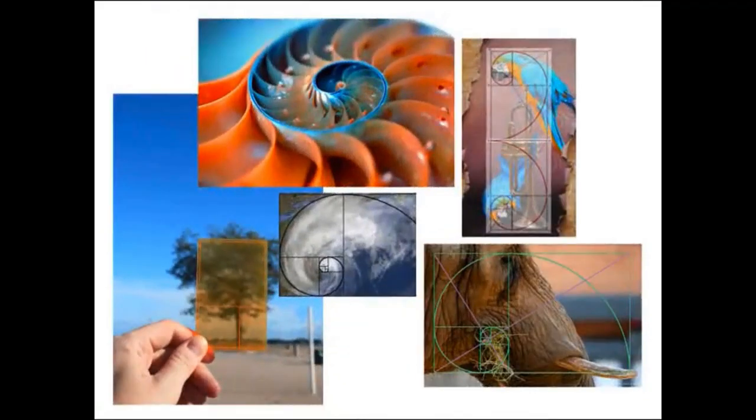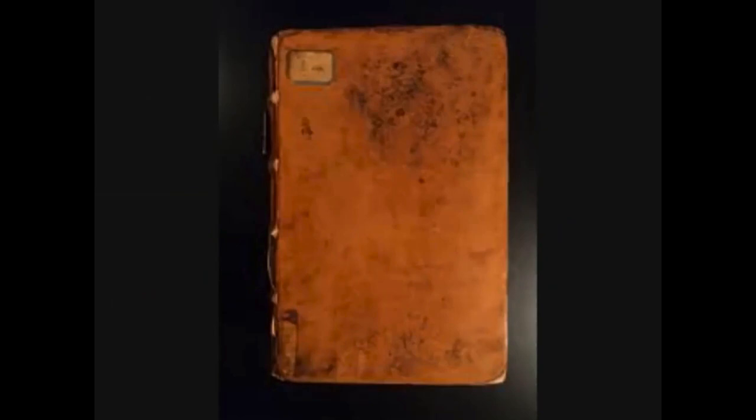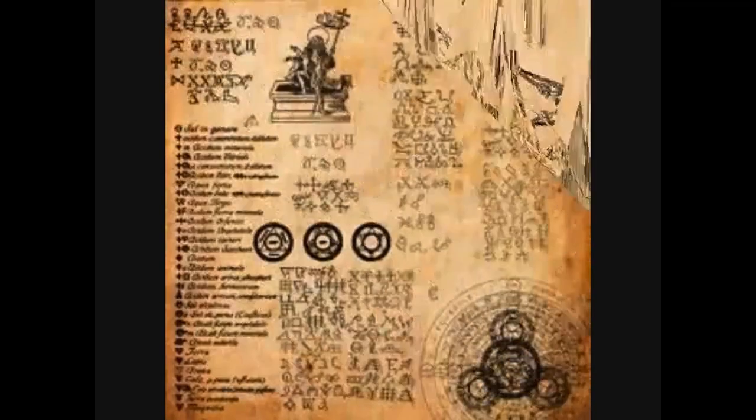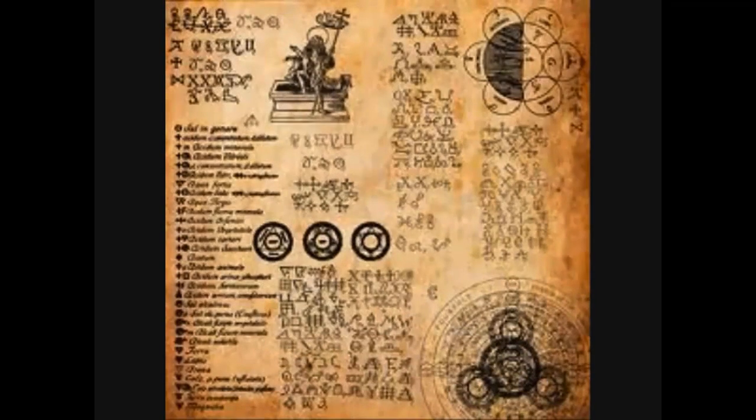Using it, Poincaré worked on celestial mechanics and specifically in a 270-page prize-winning and initially flawed paper, started the qualitative theory of dynamical systems.